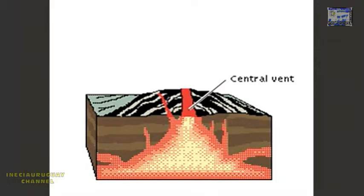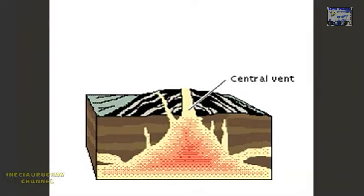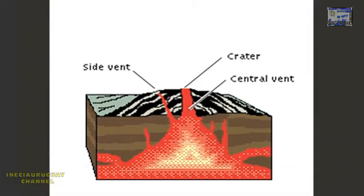The throat of the volcano is called the central vent. Usually, there is a bowl-shaped crater at the top of the central vent.